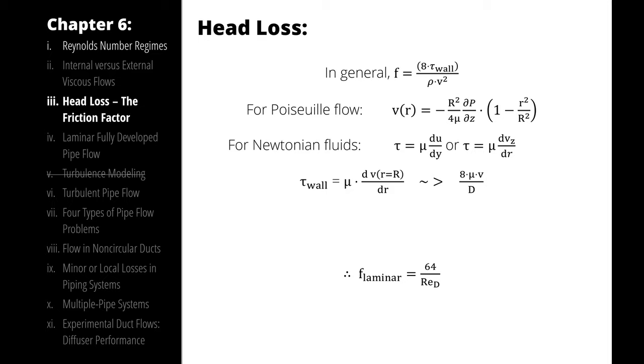For laminar flow, we can use our Poiseuille flow velocity profile that we had developed back in our differential relations chapter. And for Newtonian fluids, we can use a shear stress relationship between viscosity and shear rate to represent our shear stress at the wall as 8 times dynamic viscosity times velocity divided by diameter.